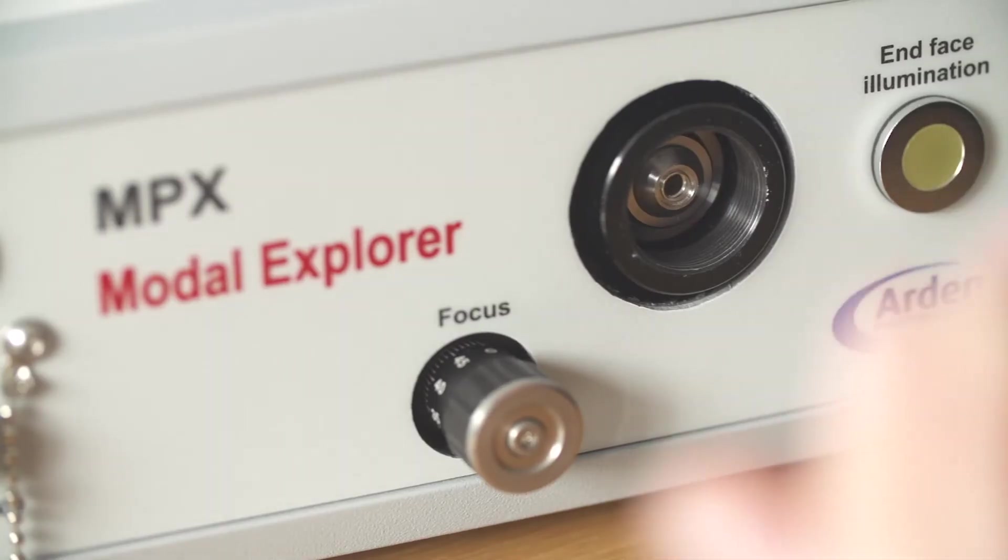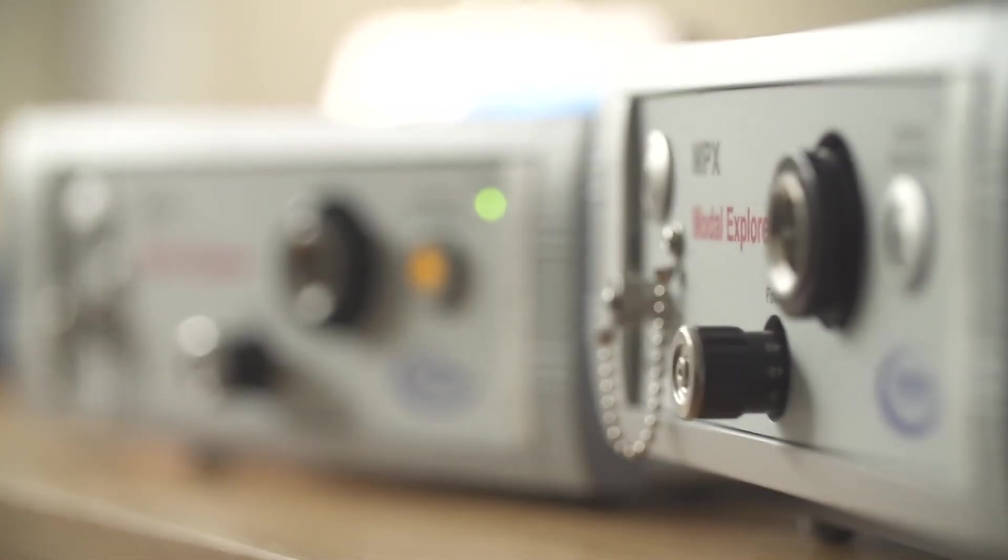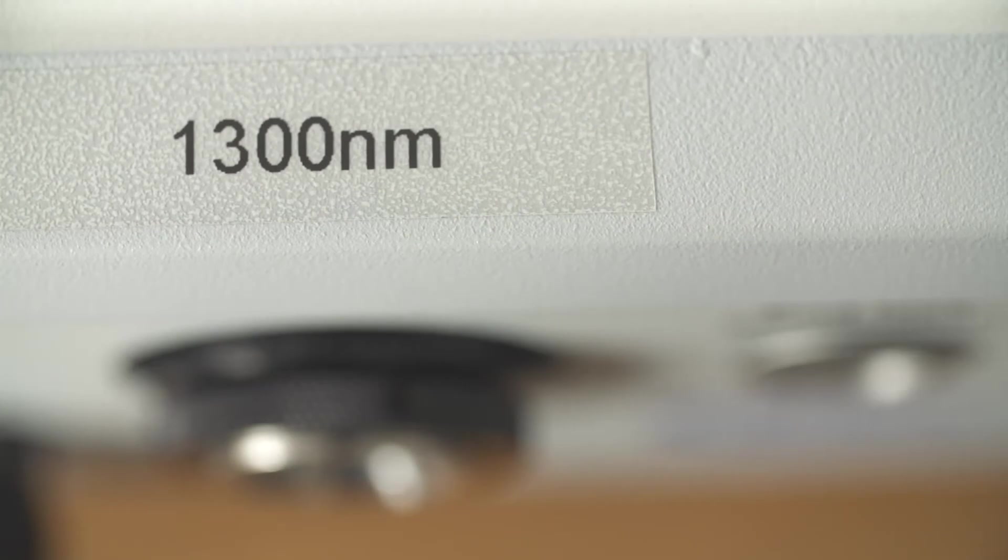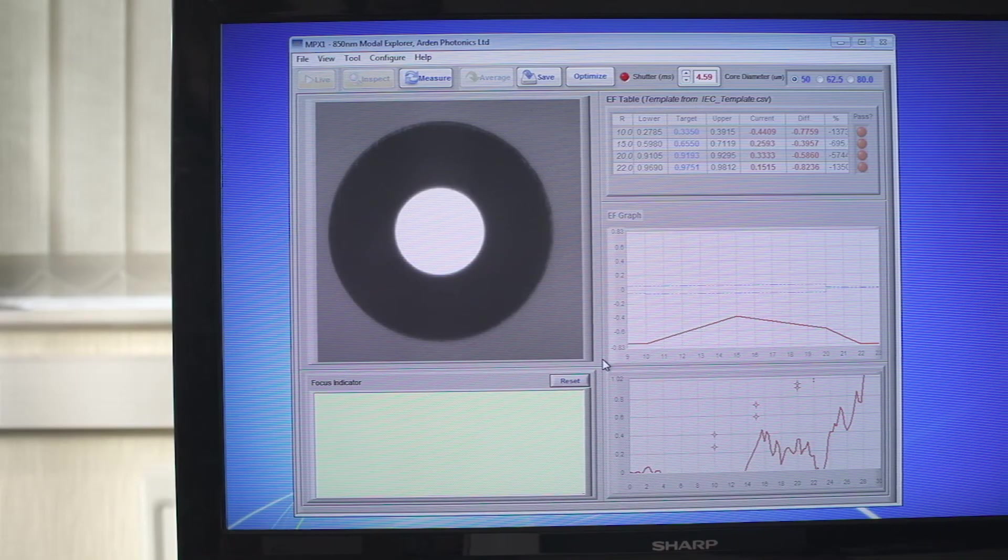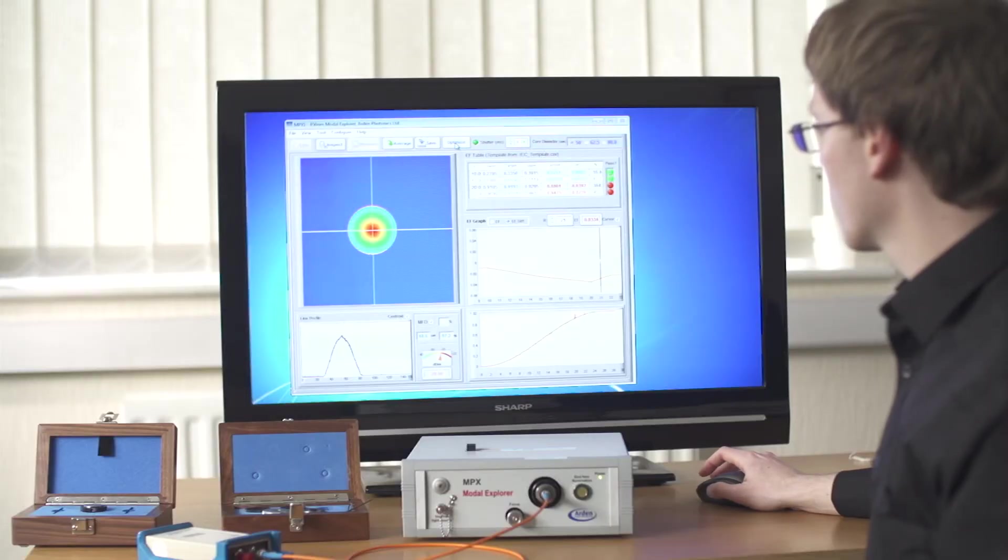We offer the MPX1 measuring at a wavelength of 850 nm and its heavier sister, the MPX2, for measurements at 1300 nm. The MPX is a fast and easy way to determine the encircled flux of your light source.